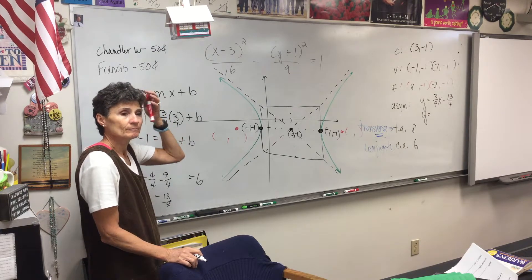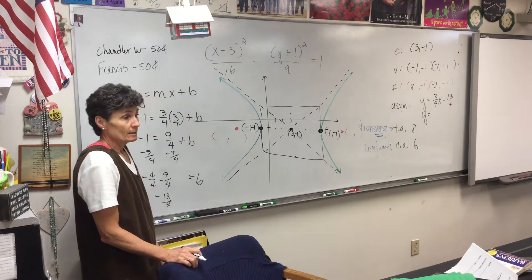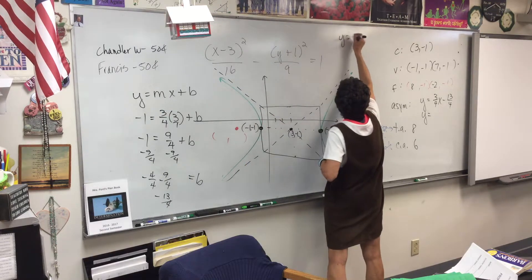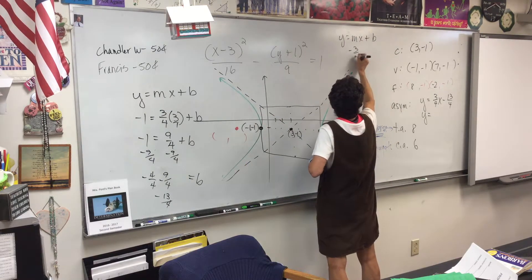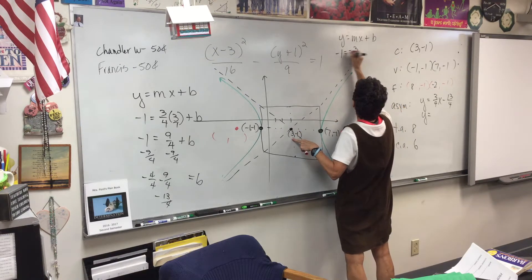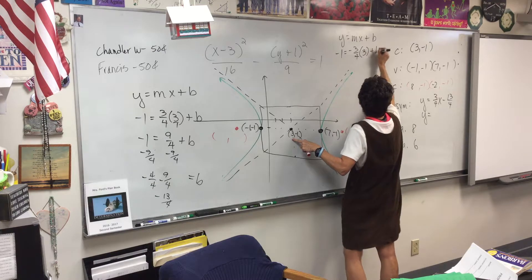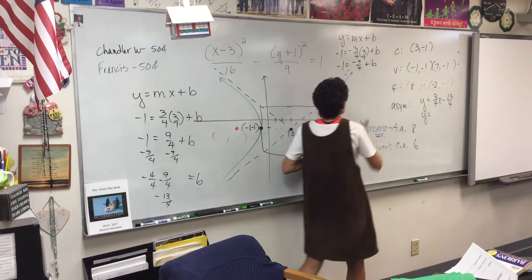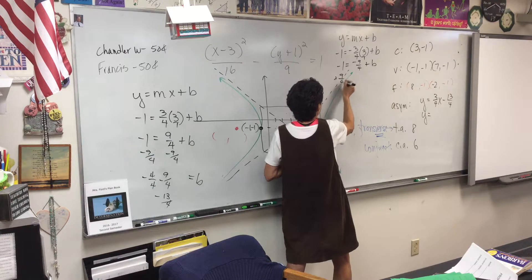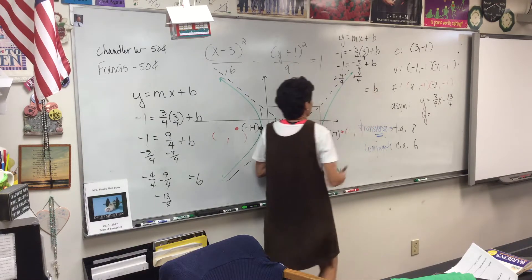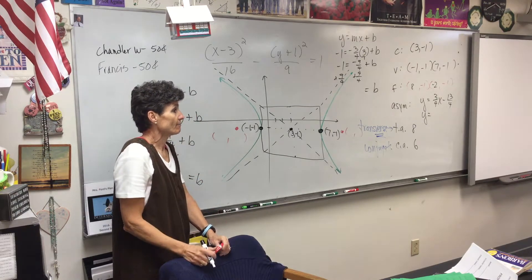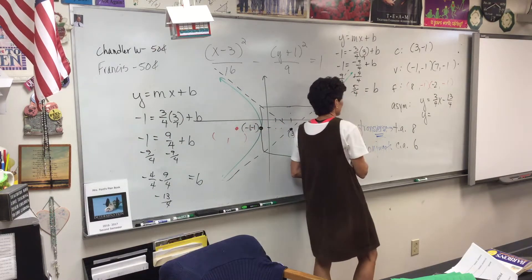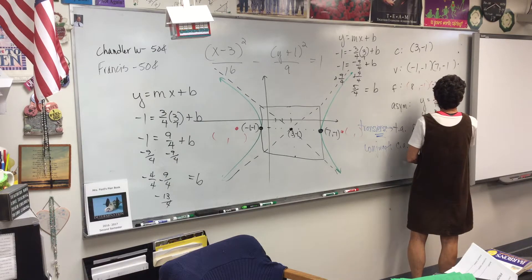Now we do the other asymptote. The slope is negative three-fourths. Using the same center point — negative 1 for y, 3 for x — negative 1 equals negative three-fourths times 3 plus b, which gives negative nine-fourths plus b. So b equals negative one plus nine-fourths, which is five-fourths. Y equals negative three-fourths x plus five-fourths. That was a long problem.